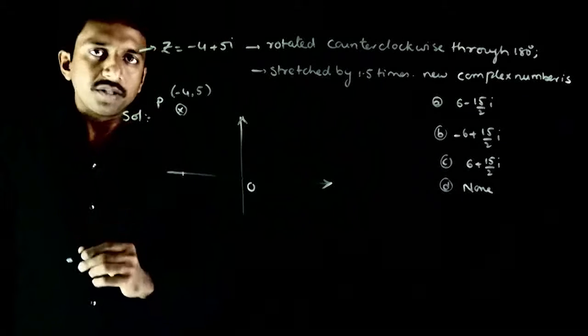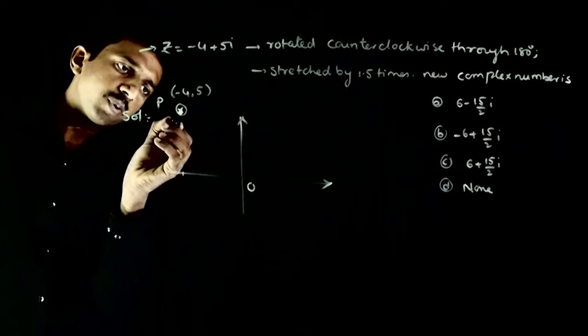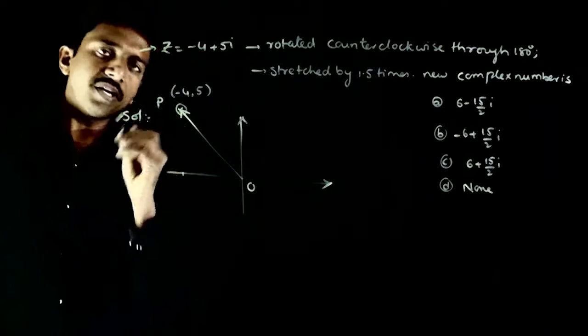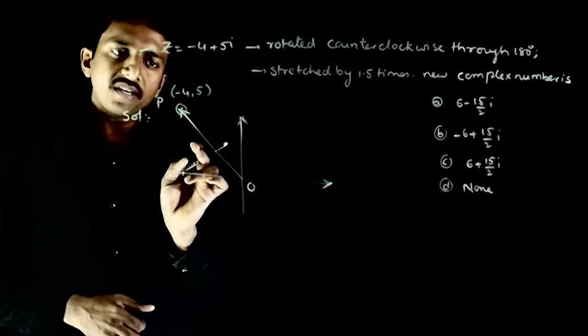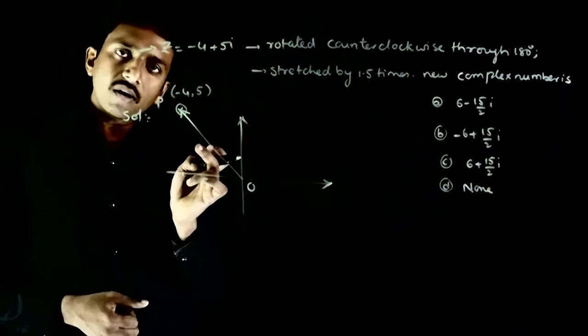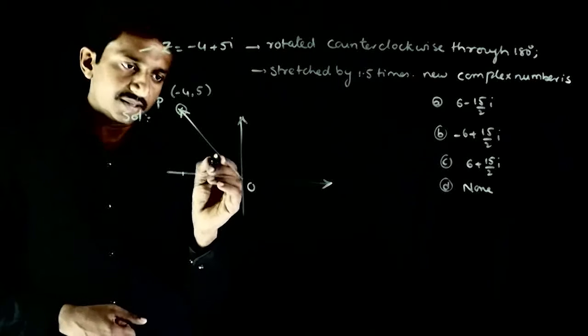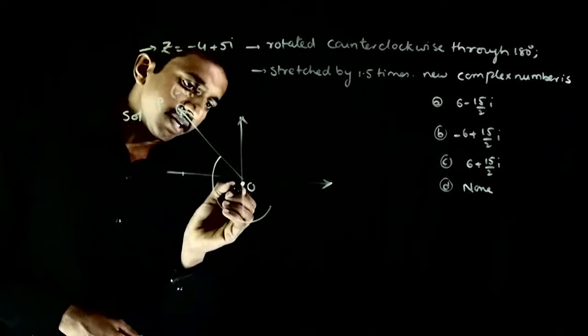So let O be the origin. So you have the position vector of this point which is OP bar. Now what has happened is, this vector is rotated in counterclockwise direction through 180 degrees. So it means exactly 180 degrees rotate.